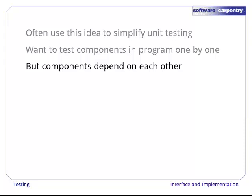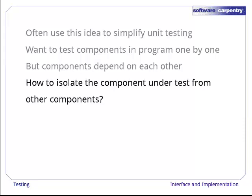But the components in real programs almost always depend on each other. This function calls that one, this data structure refers to the one over there, and so on. How can we isolate the component under test from the rest of the program so that we can test it on its own?